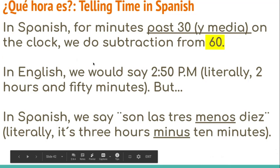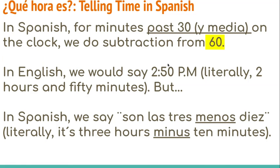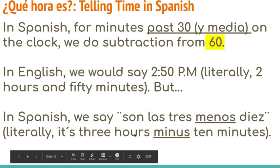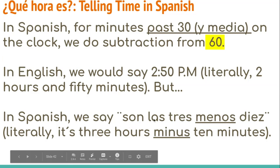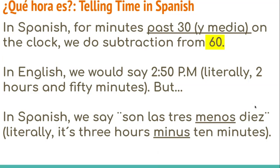In English, when we're on this half of the clock, we would say 2:50 p.m. — literally, it's 2 hours and 50 minutes in the afternoon. But in Spanish, we actually say, in English first, it's 3 hours minus 10 minutes, because 2:50 is 10 minutes before 3 o'clock. So how that translates is: son las tres menos diez — literally, it's 3 o'clock minus 10.